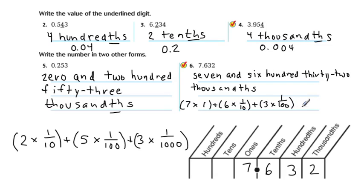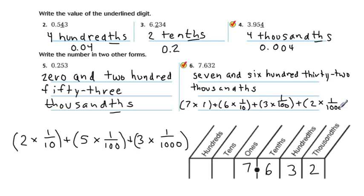1 over 100. And then finally, we're going to add that to 2 times the thousandths.